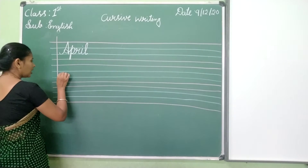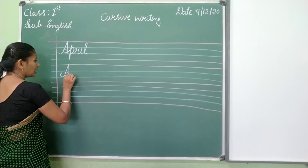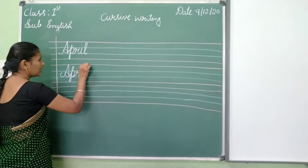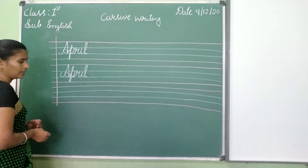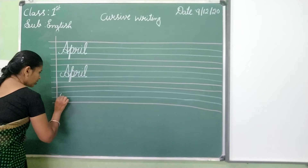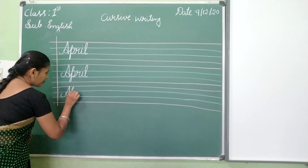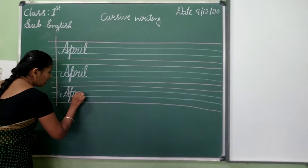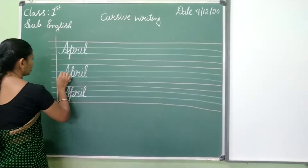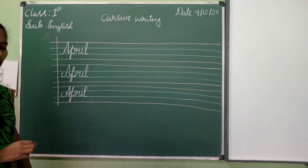Since you've done this, you can write A like this. A, P, R, I, L. April. A, P, R, I, L. April. April. A, P, R, I, L. April.